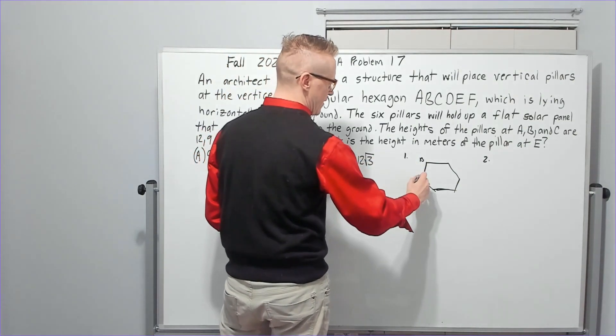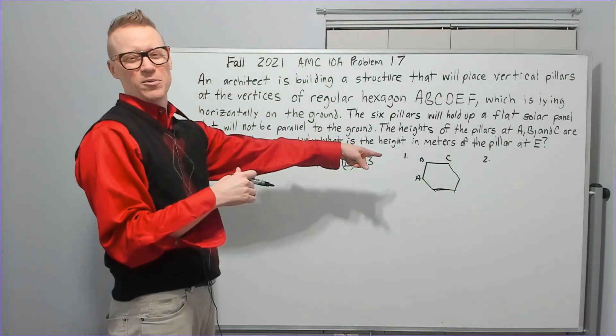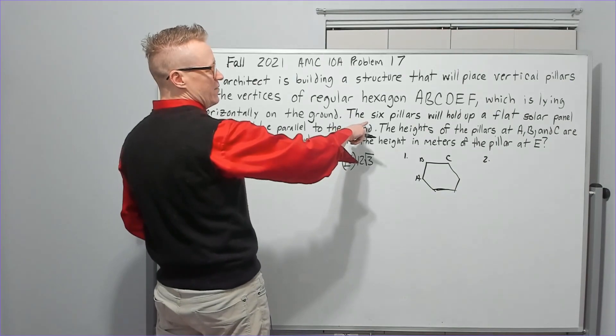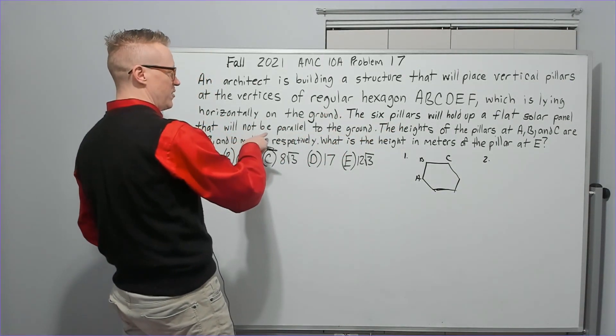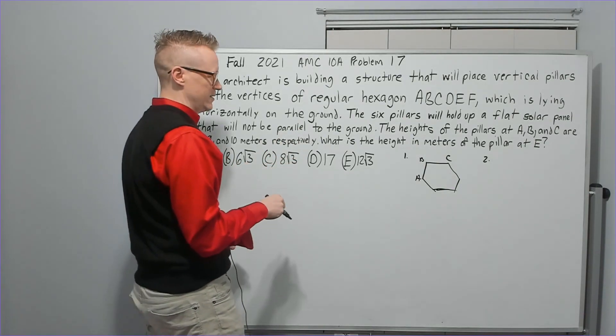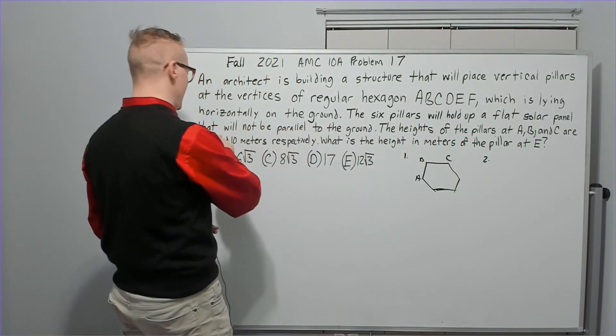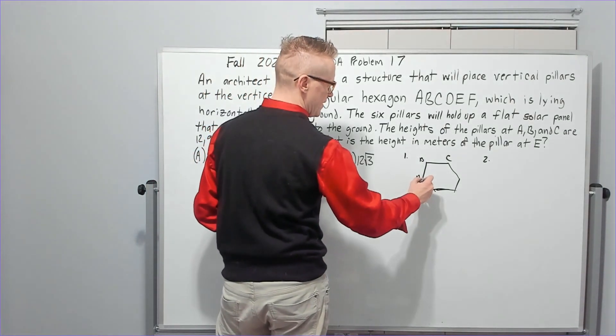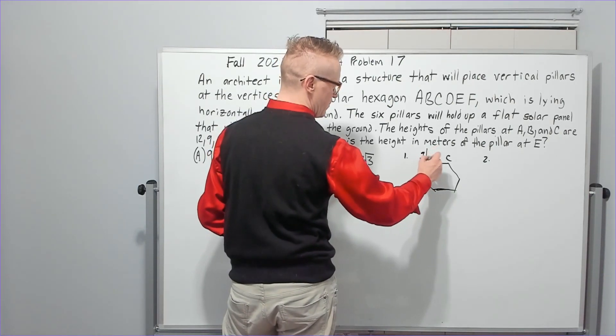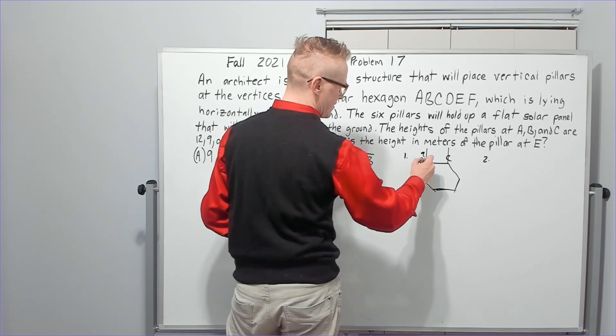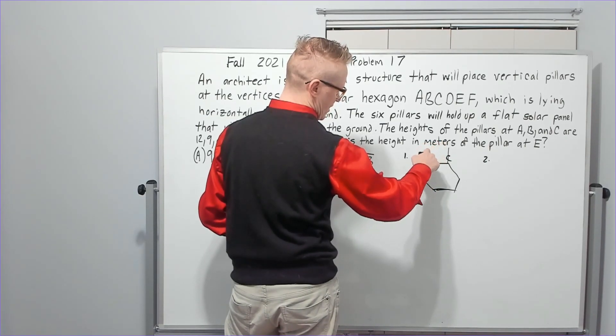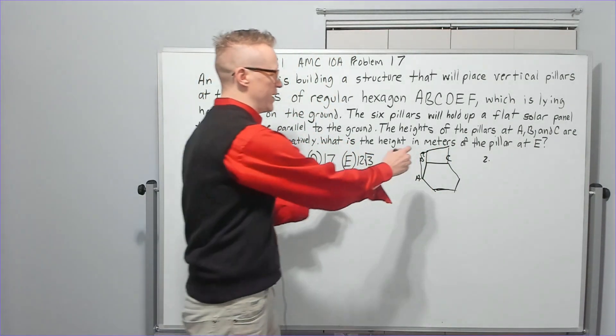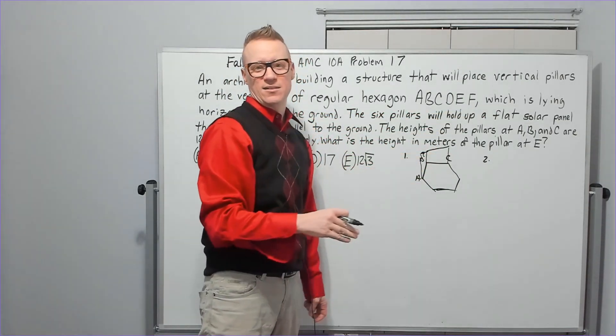So I just set up a regular hexagon like this just to get an idea. It's not really regular looking, but don't worry. I was trying to kind of do a perspective drawing. You're looking back in this way. The six pillars will hold up a flat solar panel that will not be parallel to the ground. So it's basically a planar surface, right? It's a solar panel.